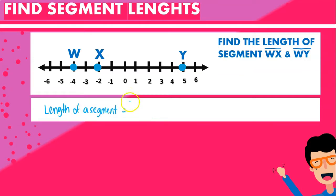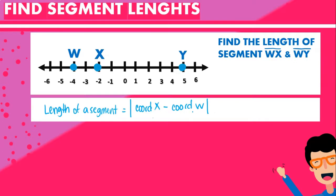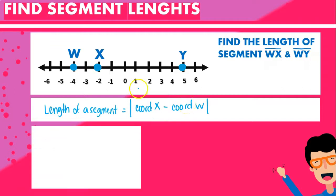We're basically going to use a very simple formula, which is going to be the absolute value of the coordinate — for example in this case — of X, minus the coordinate of W. So basically we're going to be subtracting the coordinates of the two points we want to find the length of, and then we just take the absolute value of that.